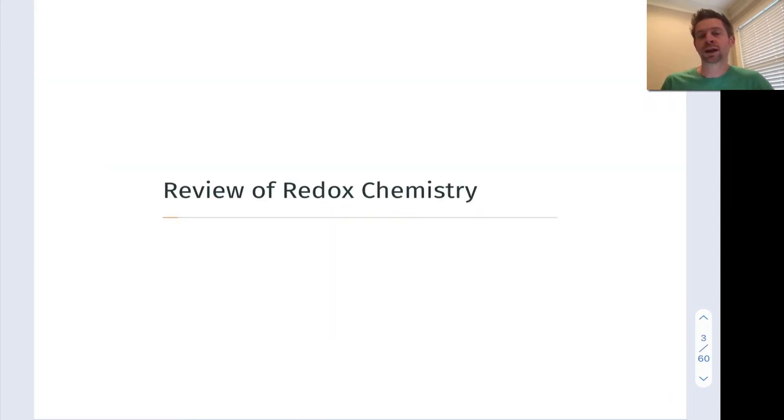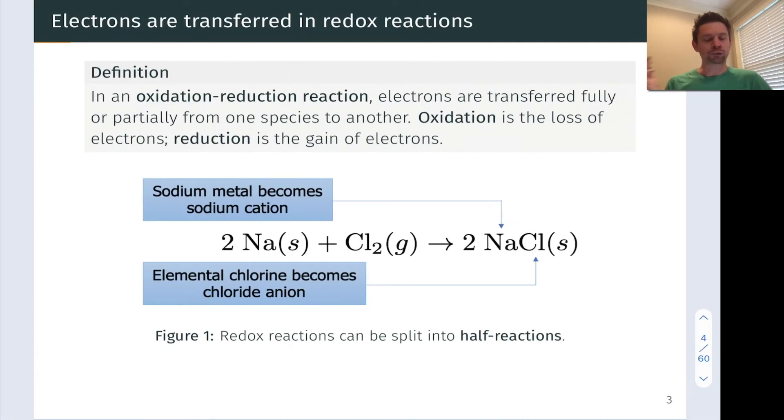Let's start by reviewing redox chemistry and redox reactions. So a redox reaction, or the more long-winded term here is oxidation-reduction reaction, involves the transfer of one or more electrons from one species to another. And in thinking about transferring electrons, we can talk about a species that loses electrons, that's what we call oxidation, and a species that gains electrons, and that's what we call reduction.